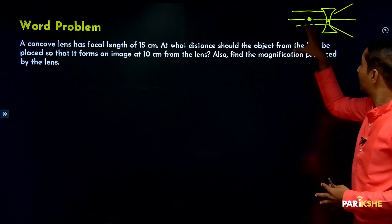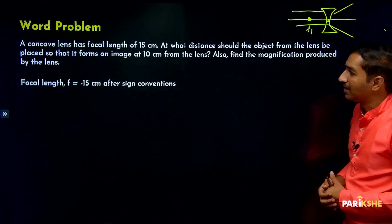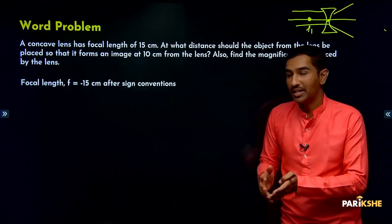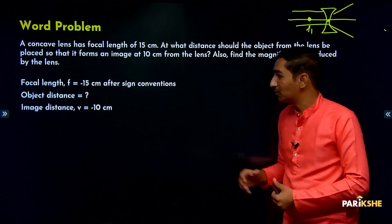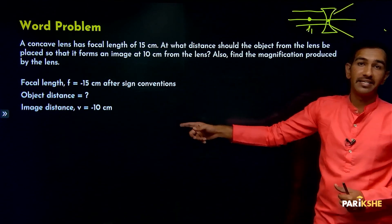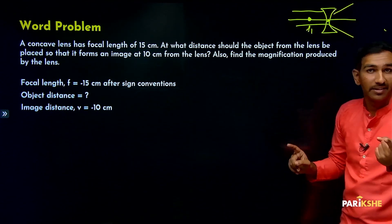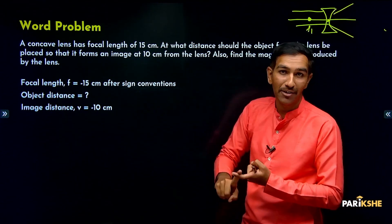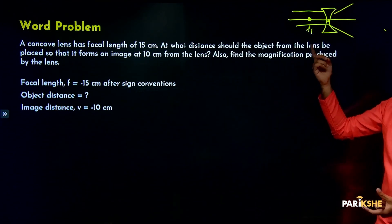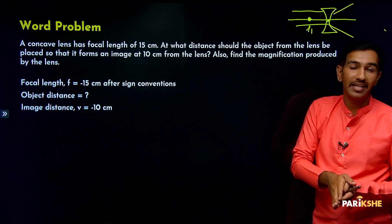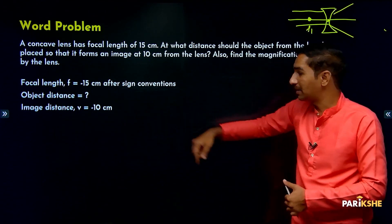Now let's solve the problem using sign convention. Focal length f equals minus 15 centimeters — this is after applying sign convention. Next, the object distance we need to find. The image distance is minus 10 centimeters. The image is minus 10 because in a diverging lens lines don't actually meet — the virtual image appears to come from the focus, which is to the left side of the optic center, so it is negative.